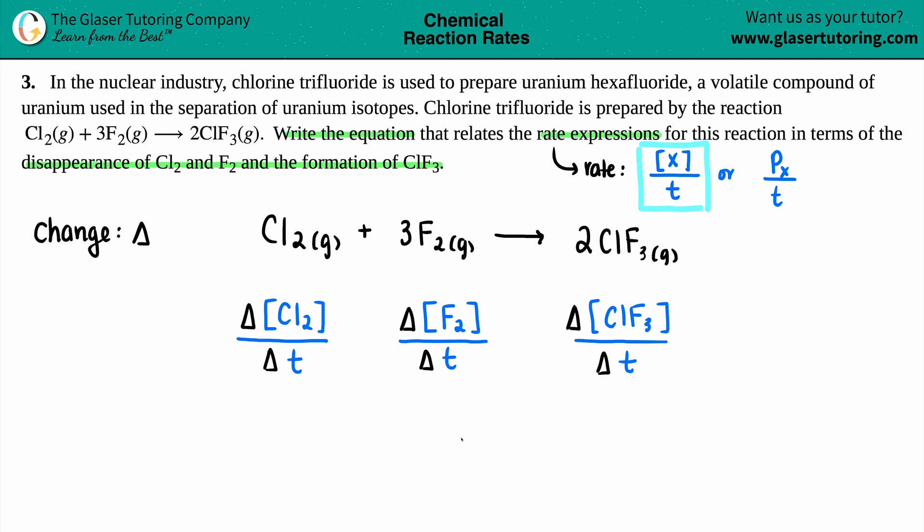They are going to be equal to each other because this is a certain type of rate. It's all based off of the coefficients, right? Just as like, if you have a certain amount of moles, you can make a mole ratio to find out all your other components, the rates are the same as well. So we can say that the rate of this Cl2 would be equal to the F2, which will be equal to the ClF3 because it's all via stoichiometry.